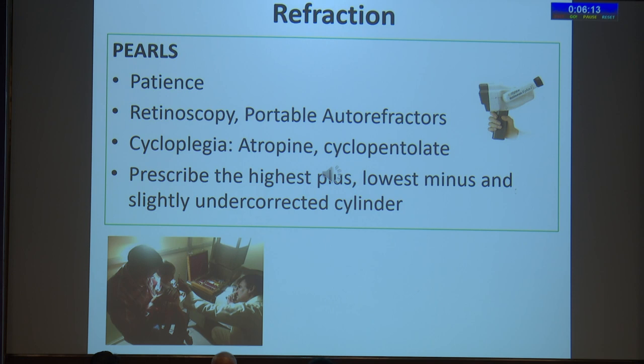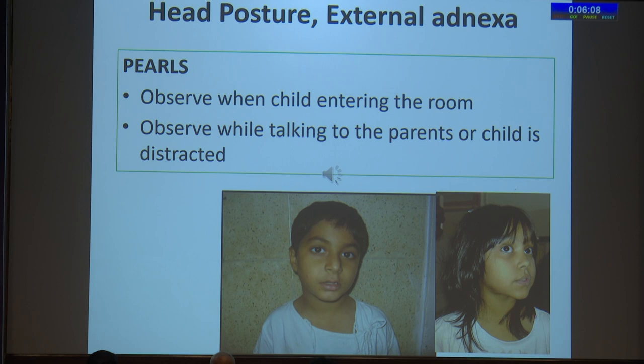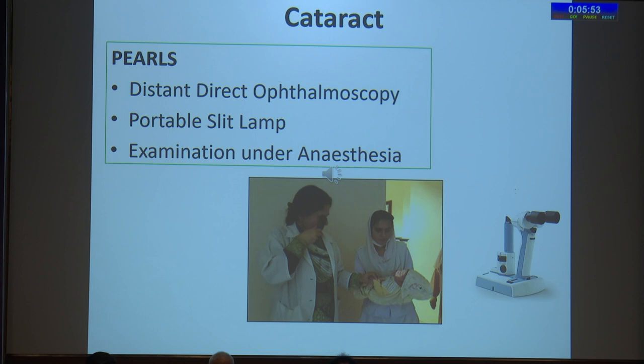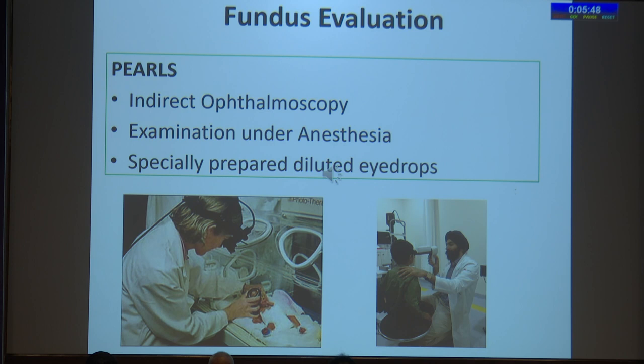You can use homatropine in slightly older children. Look for head posture or external adnexa when the child is not conscious of being observed, typically when they are just walking into the room. For evaluating ocular alignment, the best way to look for a cataract and lenticular opacity is a distant direct exam. Fundus evaluation in children is made easier with an indirect ophthalmoscope, and an examination under anesthesia may be needed to screen the periphery.